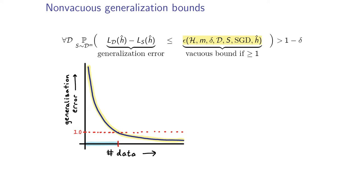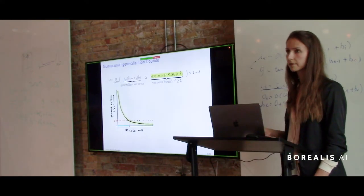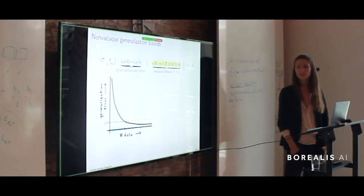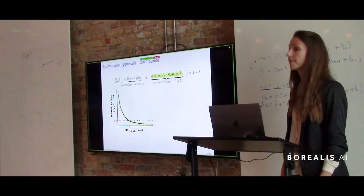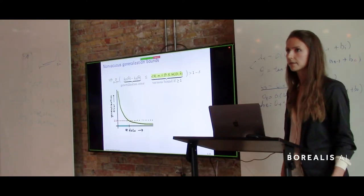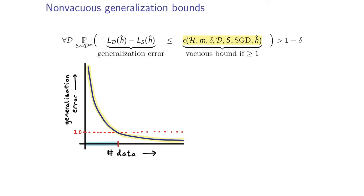We call such bounds vacuous — they upper-bound a quantity between 0 and 1 with a value above 1. What surprised me when I started working in this field was that a lot of existing generalization bounds are vacuous, at least for the amount of data we have and the size of networks we use. We are usually in this regime where, for the data and network sizes typical in practice, we get a bound above 1.